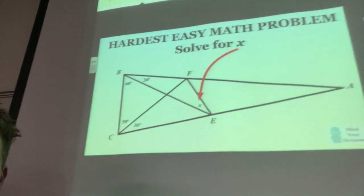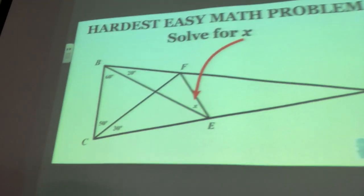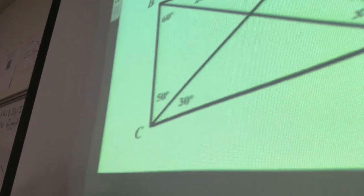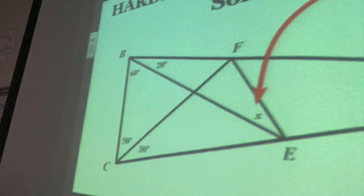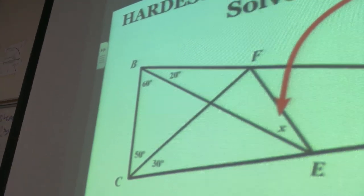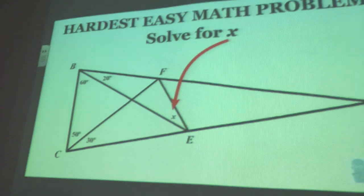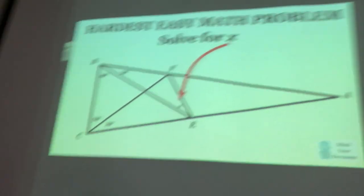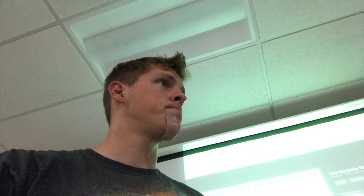This is the one I was looking for. It took me a while to solve this one, found it on Google. You have a triangle there, it's the hardest easy math problem. Solve for x. We have some values: 50 and 30, up here 60 and 20. You have to solve for x, that's your goal. Thank you for watching, I hope you found this useful. Comment any questions you might have. Stay weird.